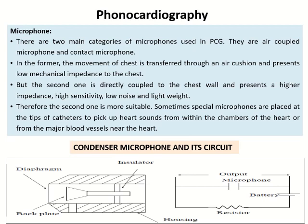Regarding the basic categories of microphones used in PCG, we normally use two types: the first is an air-coupled microphone and the second is a contact microphone. The air-coupled microphone is kept over the chest with an air cushion, converting sound produced by the heart from mechanical energy into electrical energy for analysis. The contact microphone is a condenser-type microphone which utilizes a diaphragm for direct conversion of sound energy into electrical energy. You can notice the circuit diagram of the condenser microphone type at the bottom of the page. Most cases rely on the condenser microphone type.